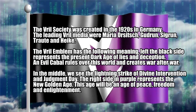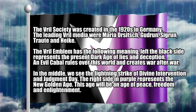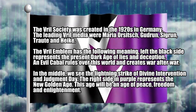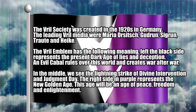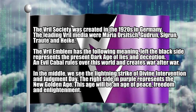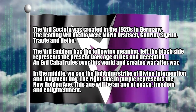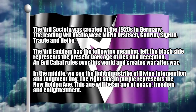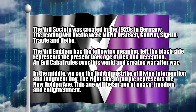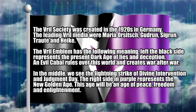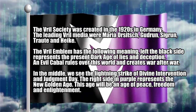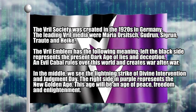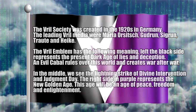The world emblem has the following meaning. On the left, the black side represents the present dark age of lies and deception, where an evil cabal rules over this world and creates war after war. In the middle we see the lightning strike of Divine Intervention and Judgment Day. The right side in purple represents the new golden age — an age of peace, freedom, and enlightenment.